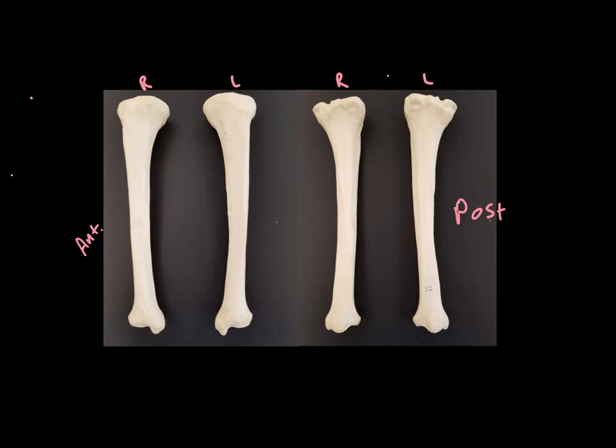So for this end to go up, for this to face forward, and for this to be towards the middle of your body, this would have to be a right tibia. There's no way to put that on the left side of your body and have all of those things facing the right way.